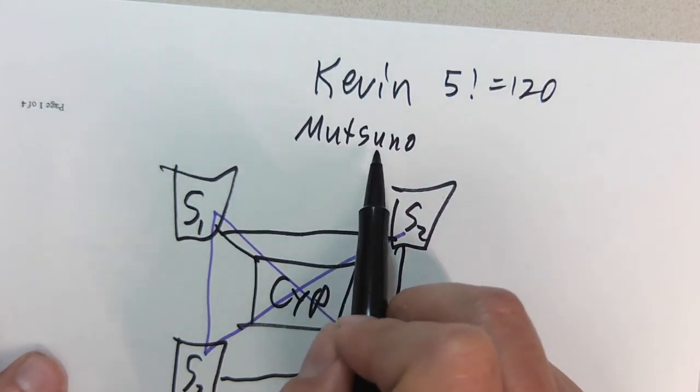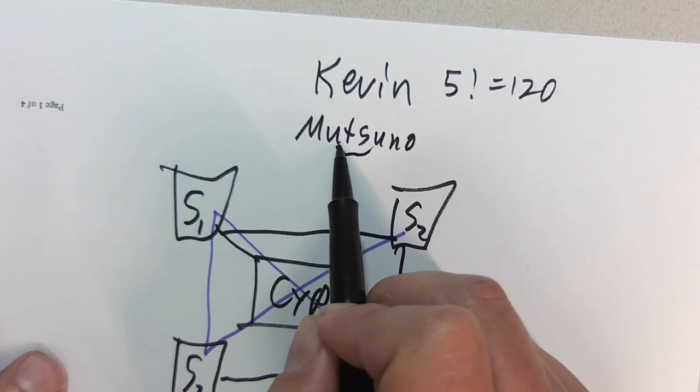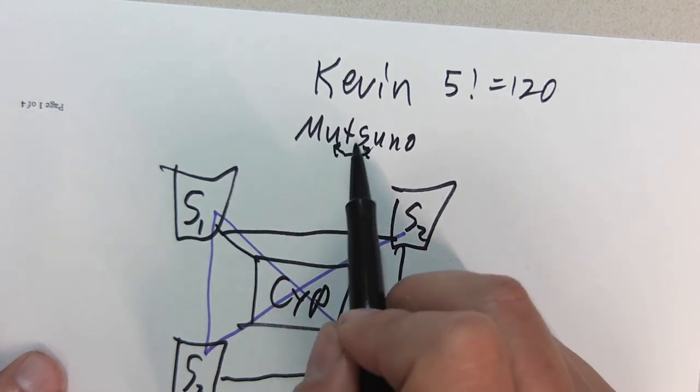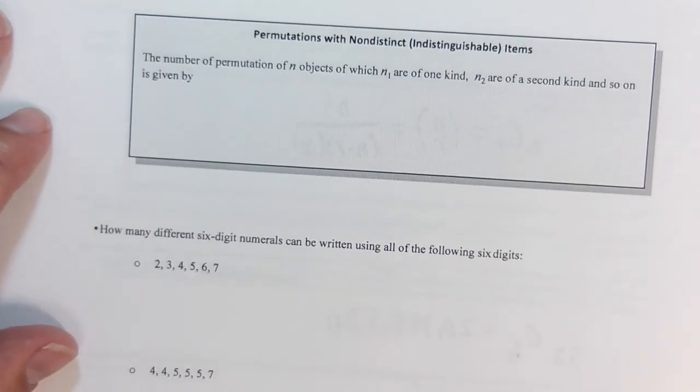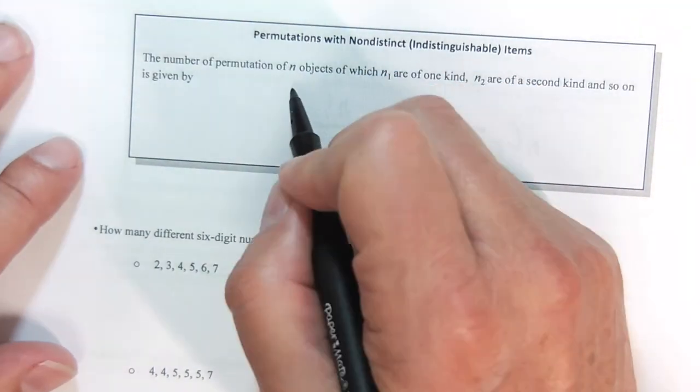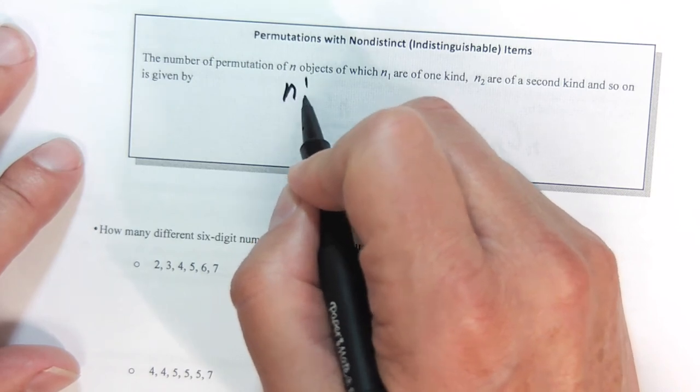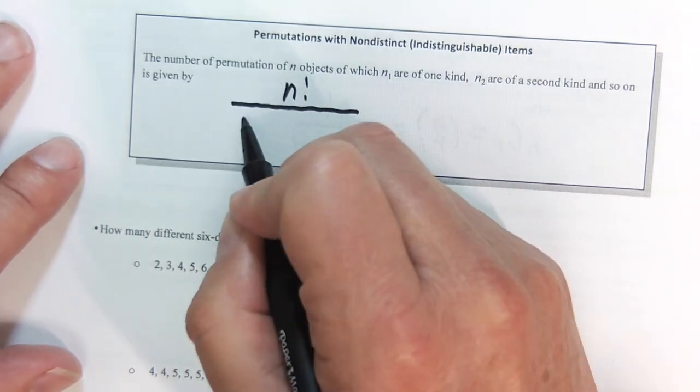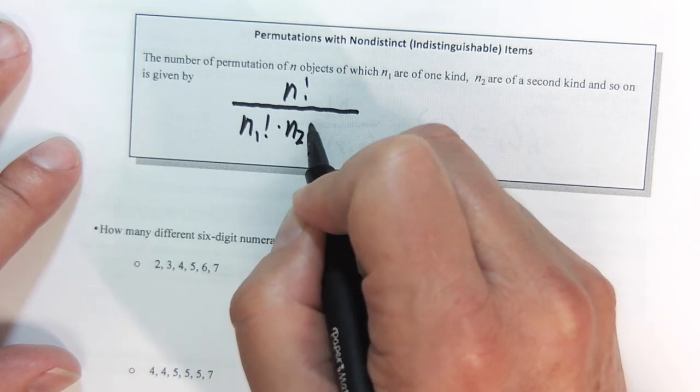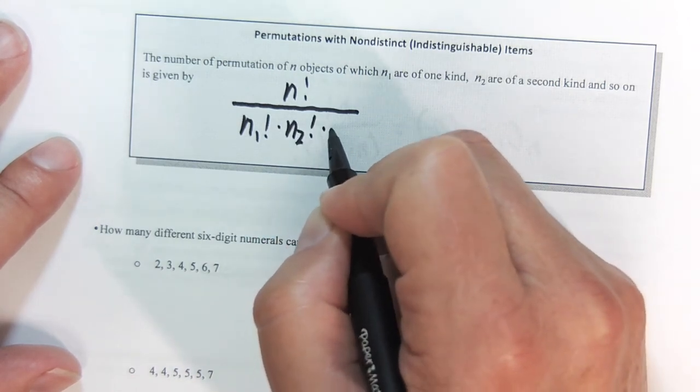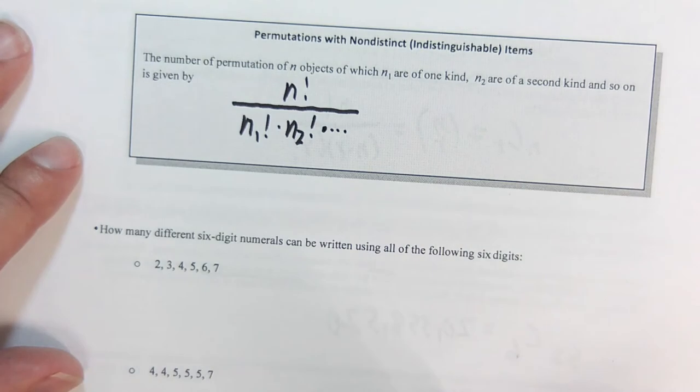My wife's name, she's from Japan, Mutsuno, has two U's. Do you see if I switch these two U's? It's the same name. So when we get repeats like that, we're going to have to come up with a way to fix that, because I don't want to double count any of those combinations as we're looking at them. So we end up with the ways that we can rearrange this is going to be n factorial divided by all the repeats factorial, as many as are needed.